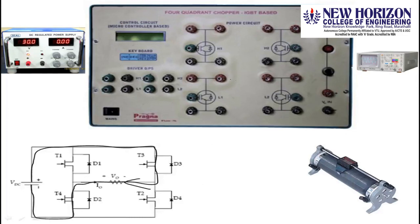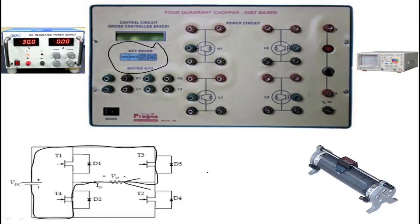By setting different PWM modes, you can get different output voltages measured via the multimeter and observe the waveform patterns on the CRO. Once you can perform the experiment, the readings can be directly obtained from the kit. Thank you.